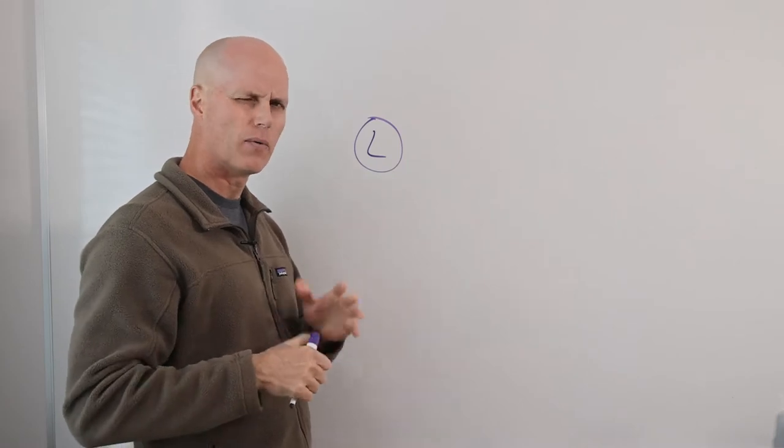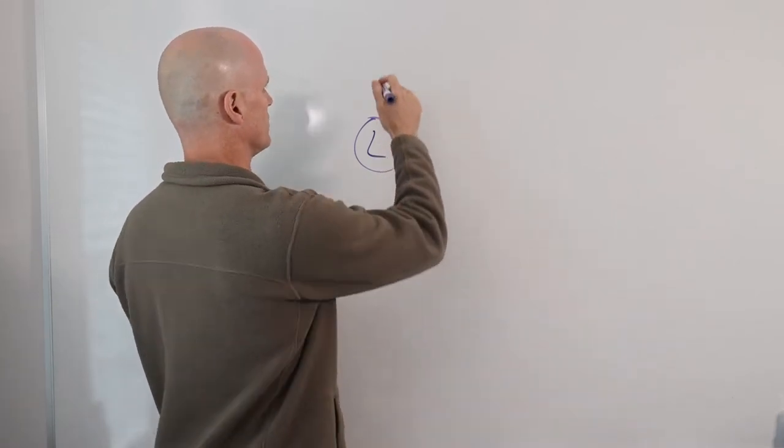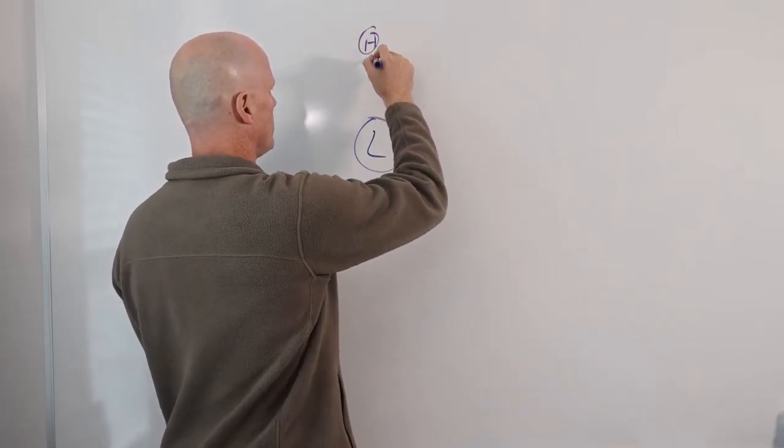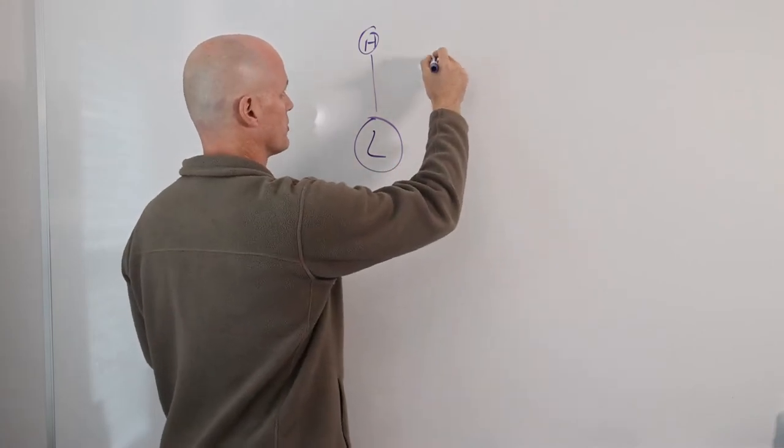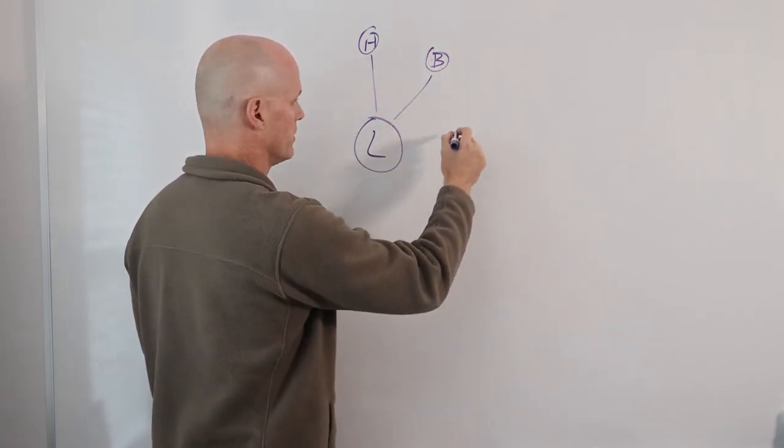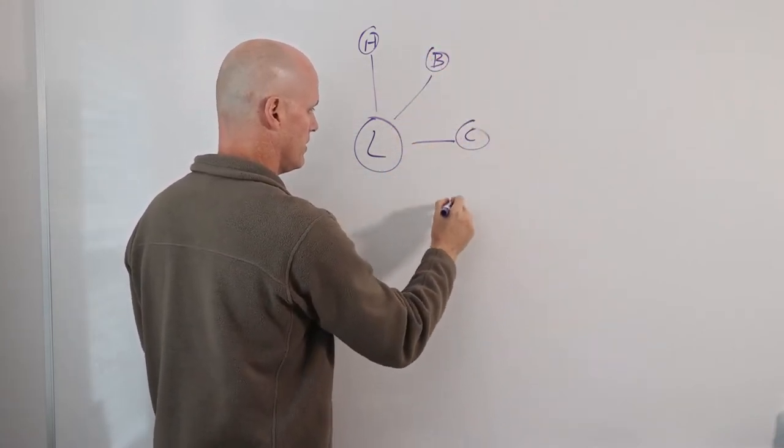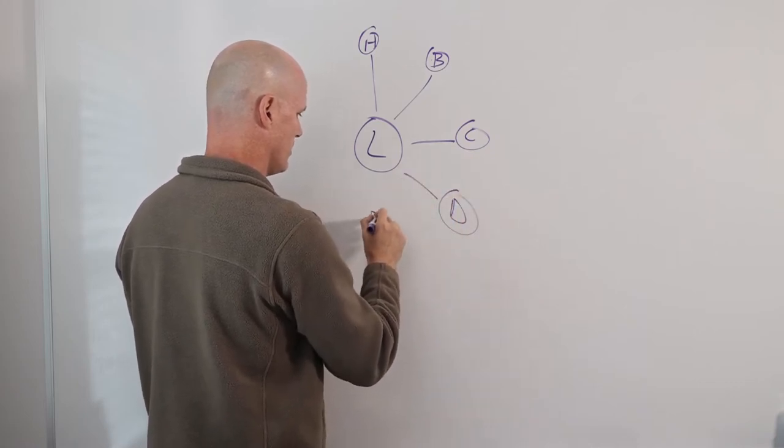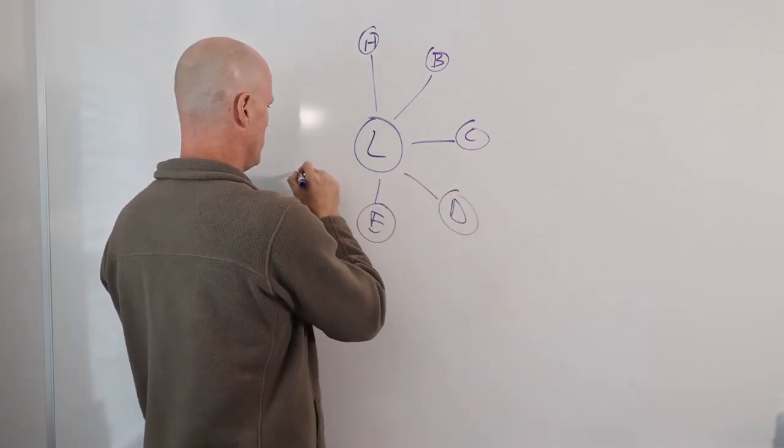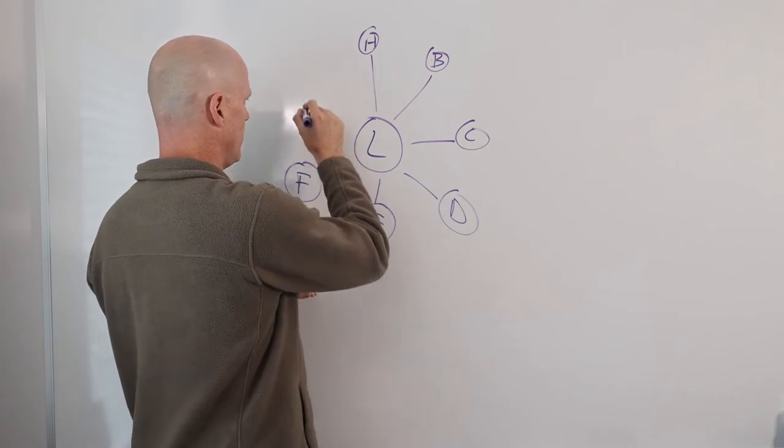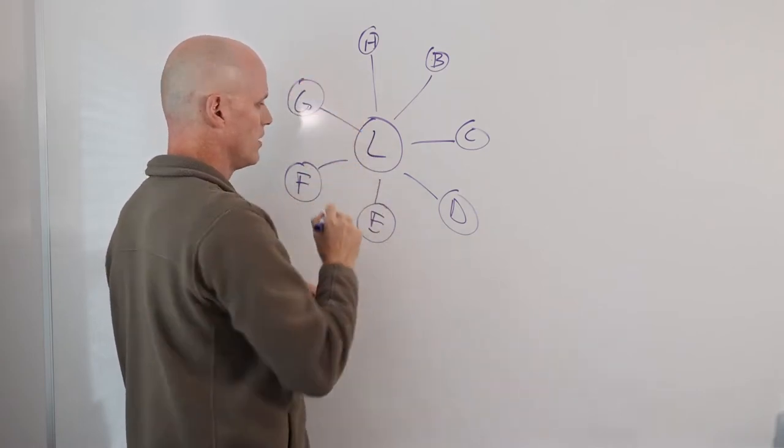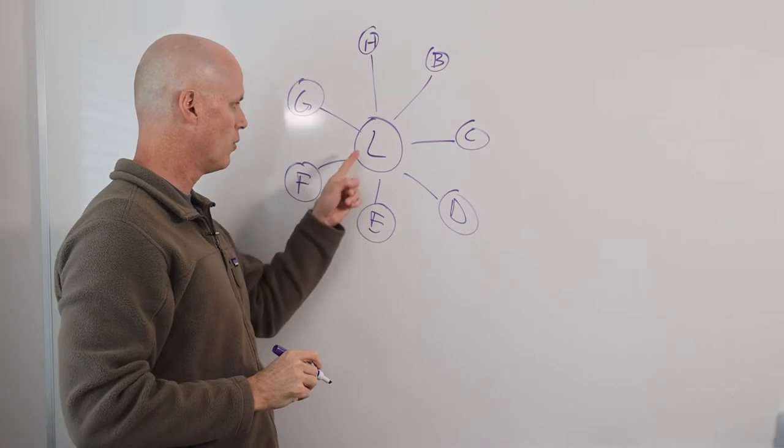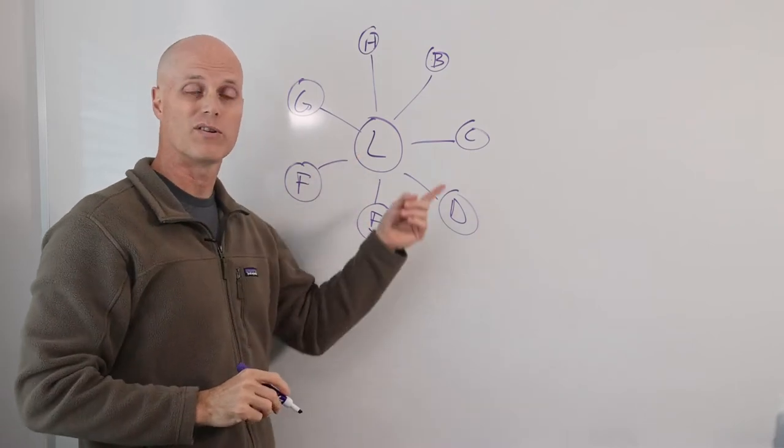What that kind of looks like from a graphical representation is person A will talk with the leader, and then person B will talk with the leader, and C, and so on. What's happening here is, instead of it being an interplay of conversations, you really can kind of have a bunch of one-on-one conversations where other people are just sitting in the room.